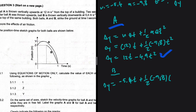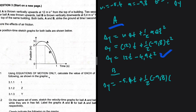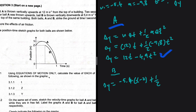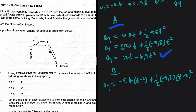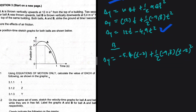Ball B was thrown two seconds after Ball A, so the time for Ball B is not t but (t − 2), because it was thrown two seconds later yet strikes the ground at the same time as Ball A. Don't make the mistake of using t for Ball B — if you do, you won't get the correct answer. So Ball B's displacement is: Δy = −5.4(t − 2) + ½(−9.8)(t − 2)².